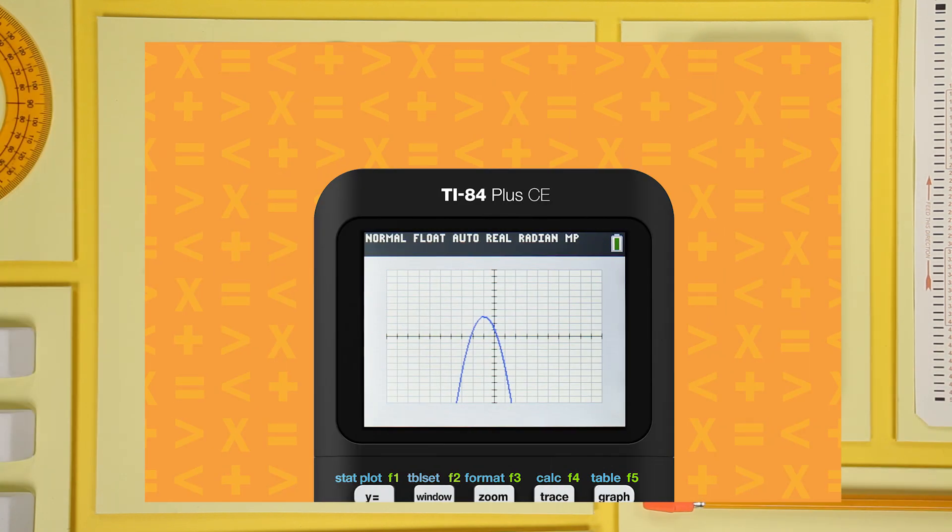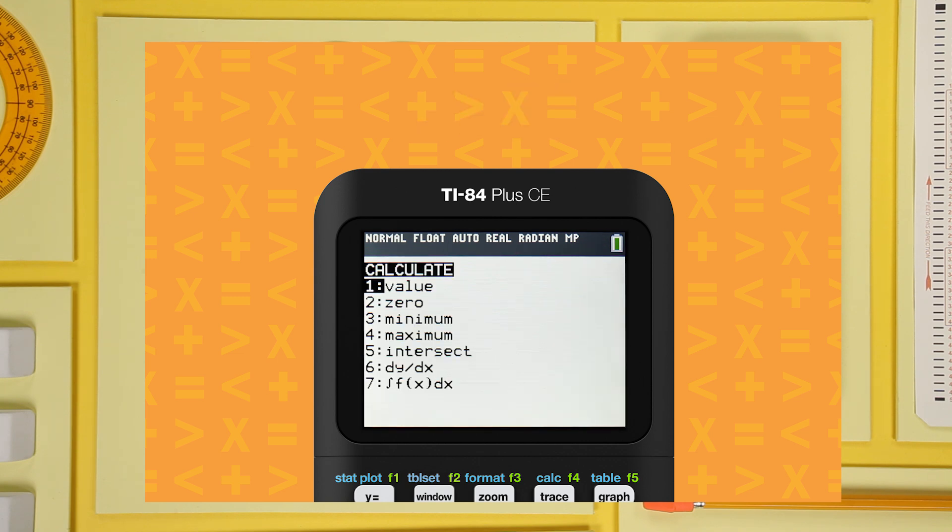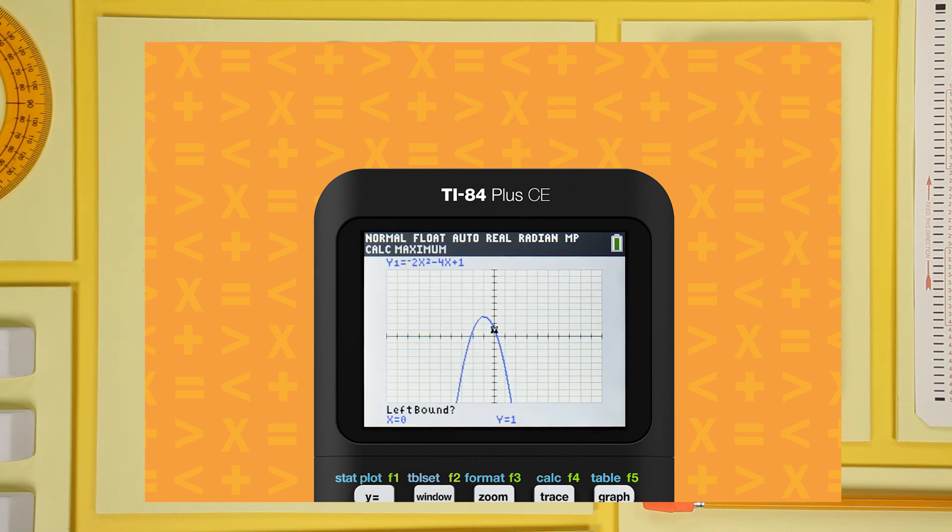Open the calc menu. Select maximum and enter. It's just like we did before. Set your left boundary and the right boundary. There's your arrows.